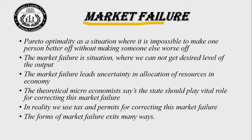Pareto optimality is a situation where it is impossible to make one person better off without making someone else worse off. Market failure is a situation where we cannot get a desired level of output — the situation where we cannot reach the desired level of output is called market failure. Market failure leads to uncertainty in the allocation of resources in the economy.